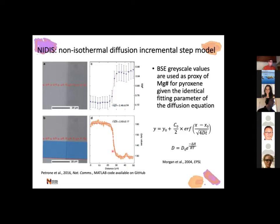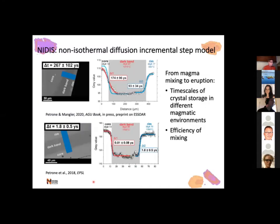In terms of the modeling itself, we used a simple 1D equation from Morgan et al., using the backscattered electron gray value as a proxy of the magnesium number, on the basis that the grayscale value and the compositional profile have very similar fitting parameter: the square root of 4DT. We calculate the gray value along the blue rectangle using a MATLAB code, and all the fitting is done using a MATLAB code that is freely available on GitHub. What sort of timescales can we get? We can resolve the timescale from magma mixing to eruption as the total timescale, but also the two partial timescales delta T1 and delta T2 - the timescale of crystal storage in different magmatic environments.